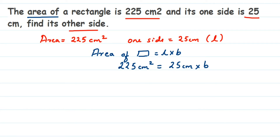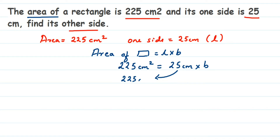We want B here — B is a variable. So I'm going to transpose 25 to the other side. Since 25 is under multiplication, transposing moves it to division. This becomes: 225 centimeter square divided by 25 centimeter equals breadth B.